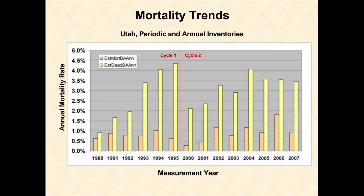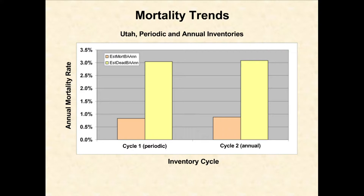In Utah — which has the best history of FIA data collection, with a solid wall-to-wall periodic inventory in the 90s and the earliest implementation of annual inventory — the amount of mortality when you get to a plot visit has been hovering around 1% or so. In recent years where we've seen some sudden decline type stands, there are some little upticks. Aggregating the old periodic inventory versus all the annual panels combined, in terms of two looks at the same population in two different decades, there's not a huge amount of difference.